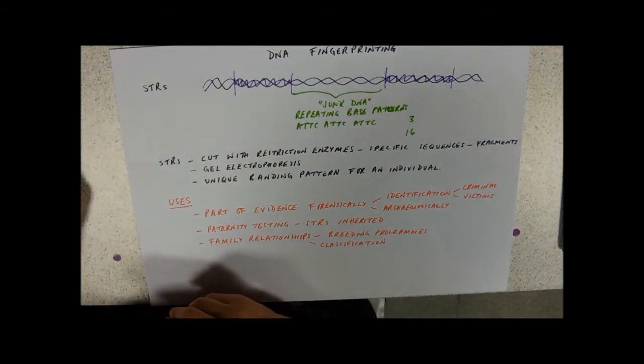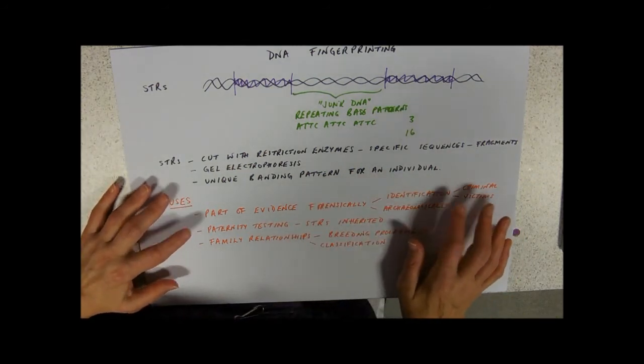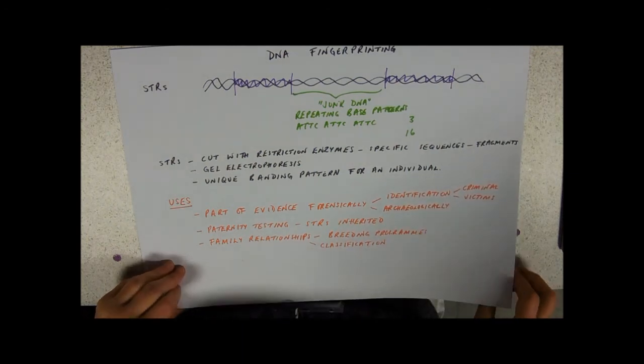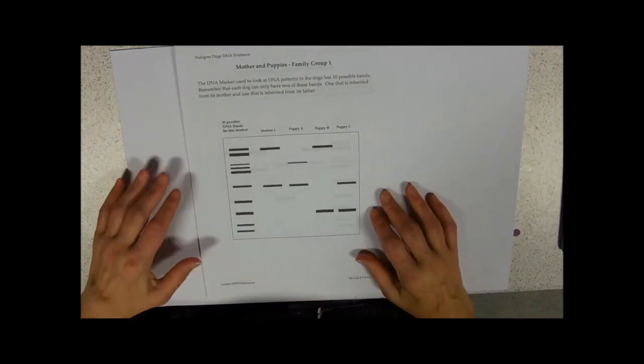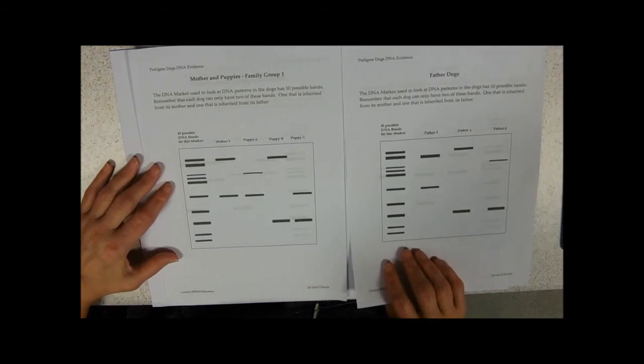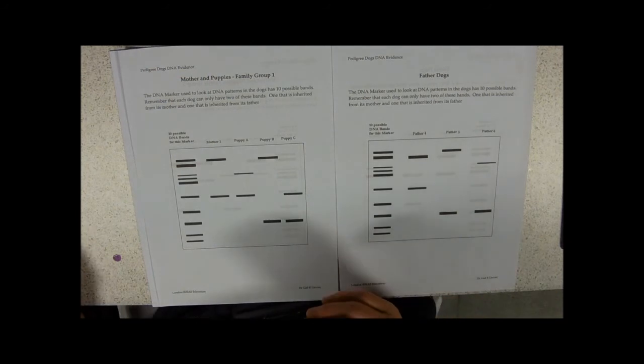So let's just have a look at paternity testing. Because in forensics you're pretty much looking for an exact match, so that's pretty easy evidence to deal with. But let's just have a look at, it's part of the activity that you've done in class, and we'll just look at one of these families of puppies. So this was the idea that you're trying to sort out, you've got your mother and their puppies and you want to know who the father is.